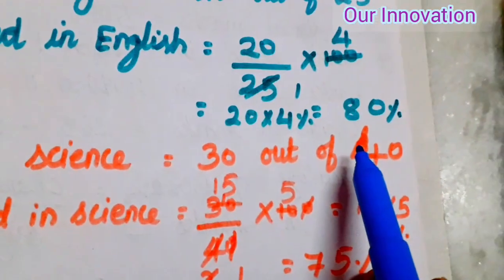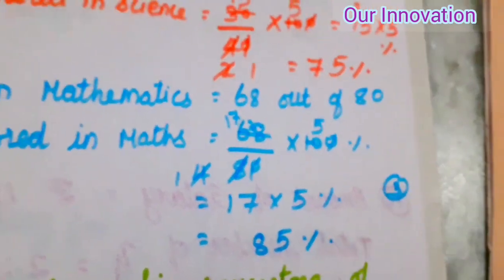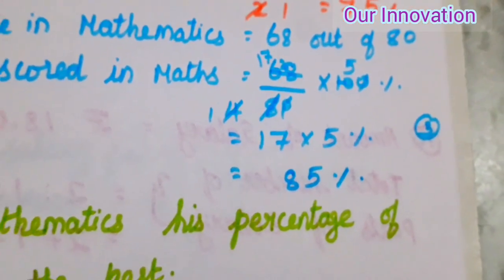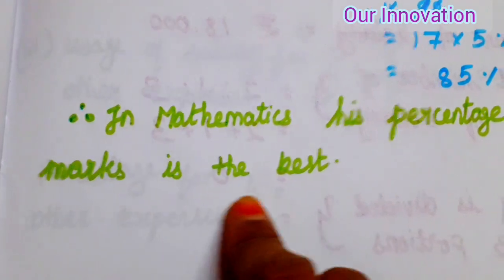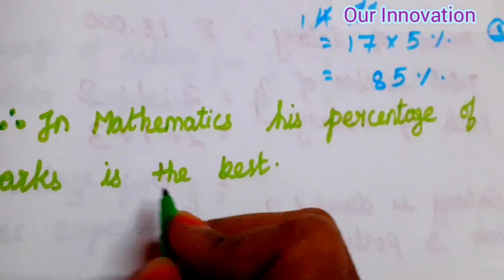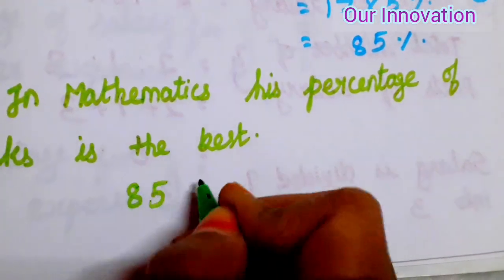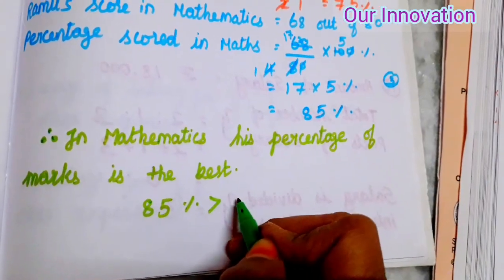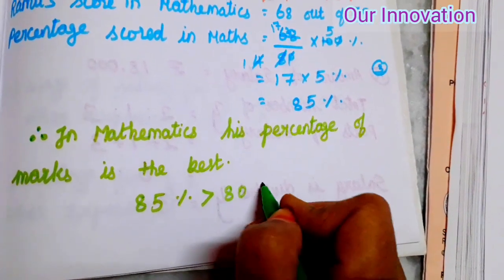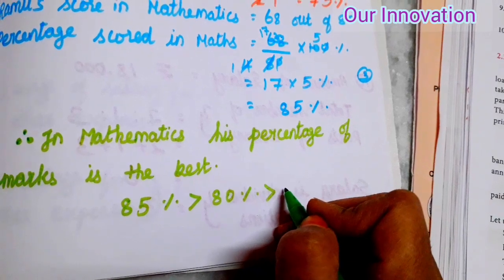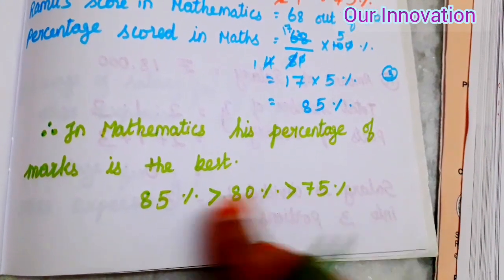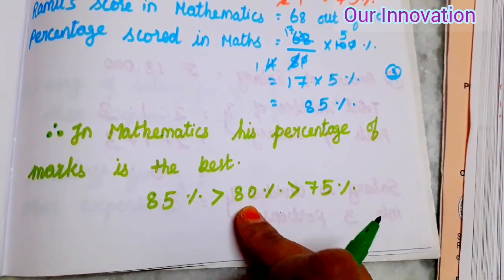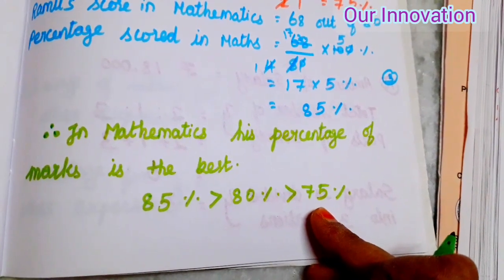Ramu's score in Mathematics is equal to 68 out of 80. So 68 by 80 into 100. Cancel zeros, then use second table. Working through the calculation gives 85 percentage. So if we notice: English is 80 percentage, Science is 75 percentage, Mathematics is 85 percentage. 85 percentage is greater than 80 percentage, which is greater than 75 percentage. So Mathematics has the highest percentage.